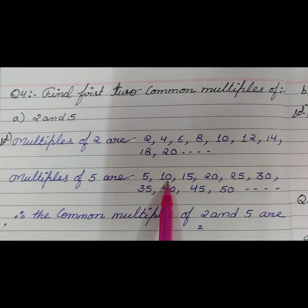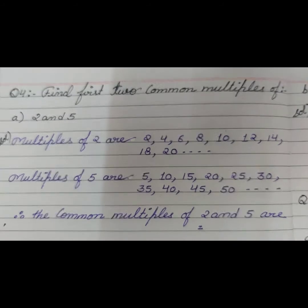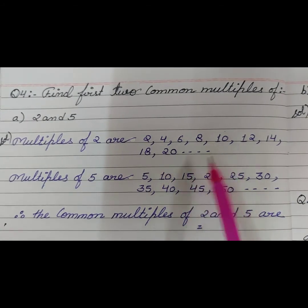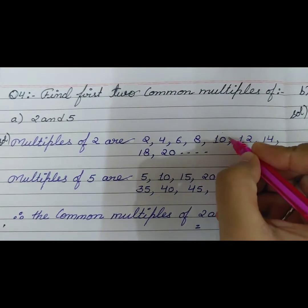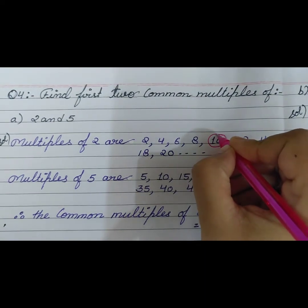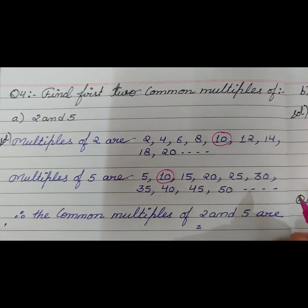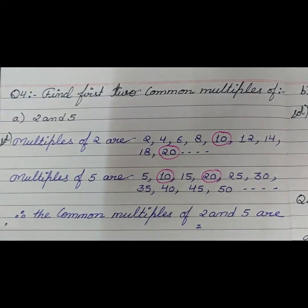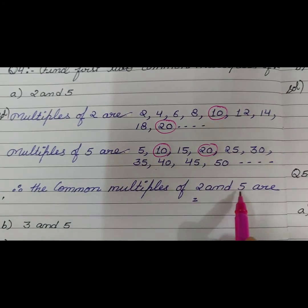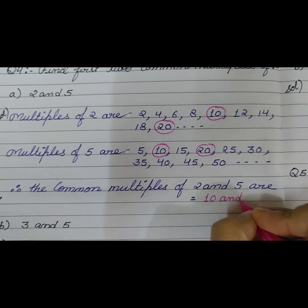Multiples of 5 are: 5, 10, 15, 20, 25, 30, 35, 40, 45, 50, and so on. Now find the common multiples. Our first common multiple is 10. Our second common multiple is 20. Therefore the common multiples of 2 and 5 are 10 and 20.